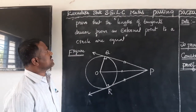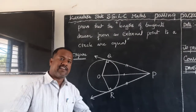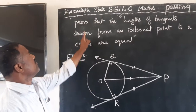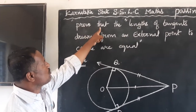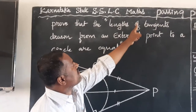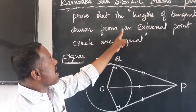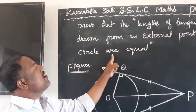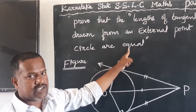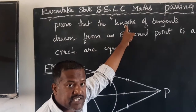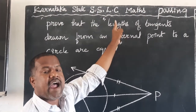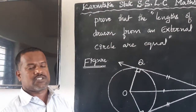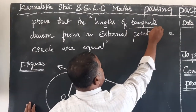We can definitely expect in any exam, test, preparatory, or midterm the question in the form of: 'Prove that the lengths of tangents drawn from an external point to a circle are equal.'